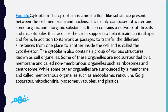The cytoplasm is mainly composed of water and some organic and inorganic substances. It also contains a network of fibers and microtubules that provide the cell with support to help it maintain its shape and form, and also serve as passages to transfer different substances from one place to another inside the cell. This network is called the cytoskeleton.